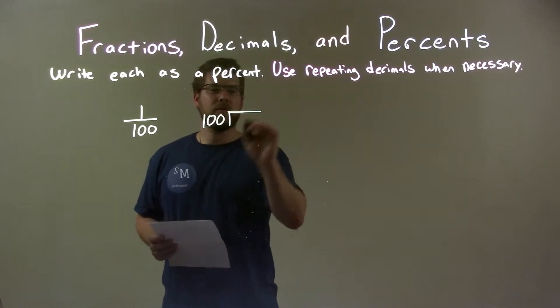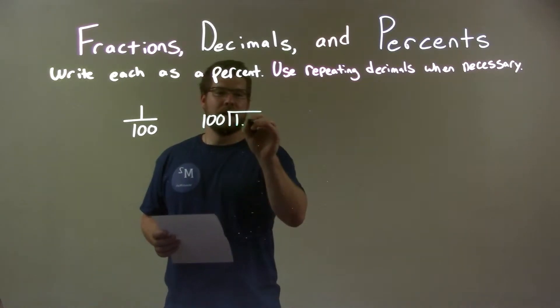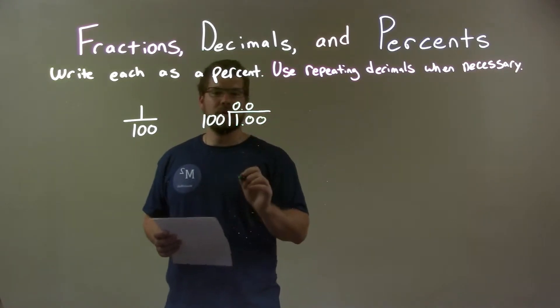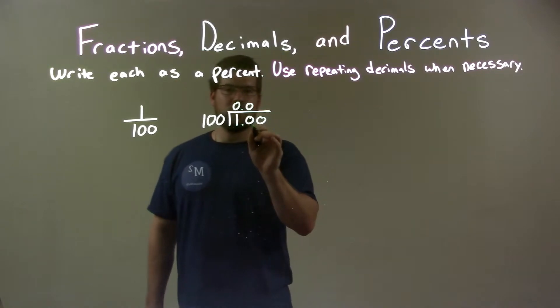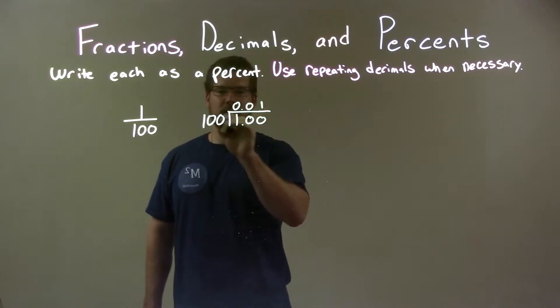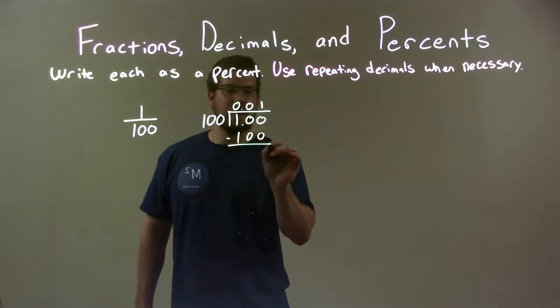Well, we need to add another 0, a place value, but it can't go into 10, so we add another 0. And 100 goes into 100 one time. One times 100, 100 is subtracted and we're done.